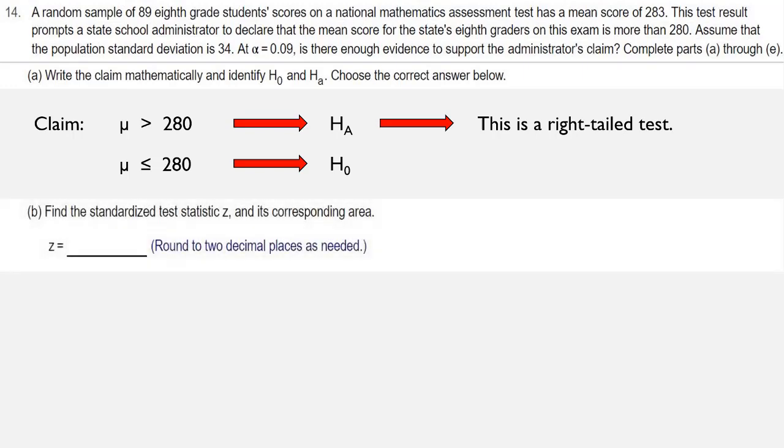For Part B, we're supposed to find the standardized test statistic z and its corresponding area. We need to use the values from the problem to compute z. Z equals x-bar minus mu of x-bar over sigma of x-bar.